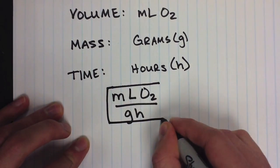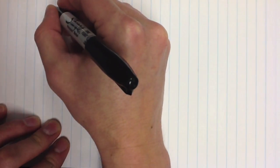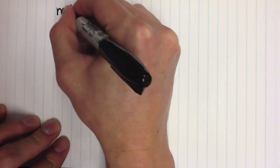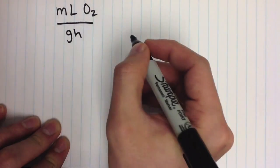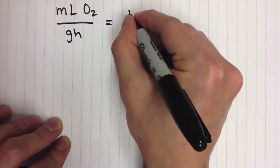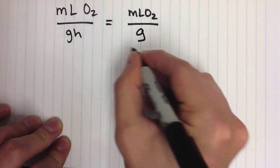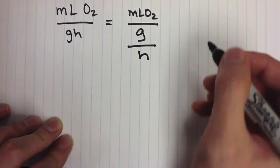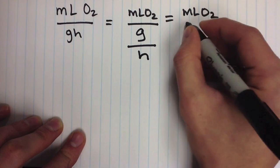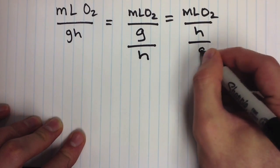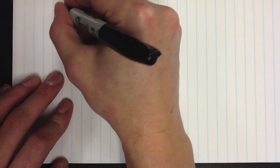In this tutorial, I will teach you how to calculate the metabolic rate of an organism in milliliters of oxygen per gram hour. First and foremost, note that milliliters of oxygen per gram hour is the same as milliliters of oxygen divided by grams divided by hours, or milliliters of oxygen divided by hours divided by grams. Now let's try an example.